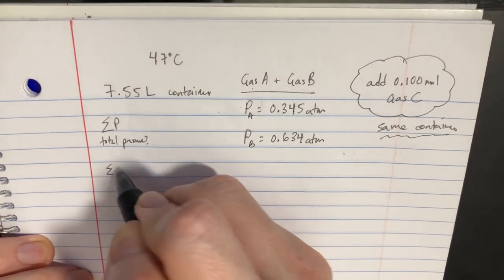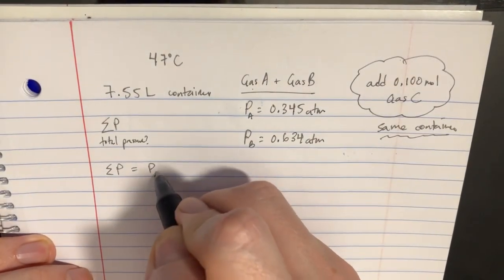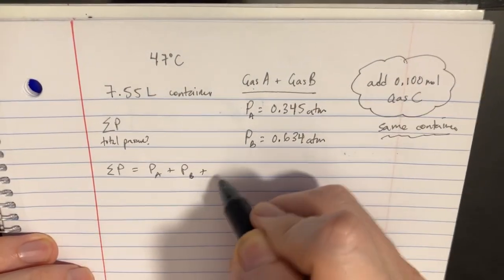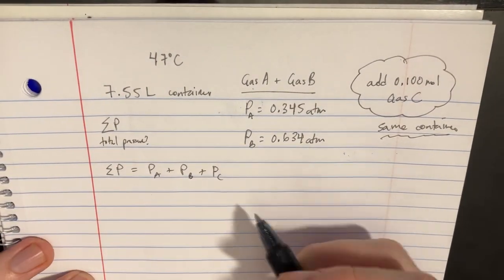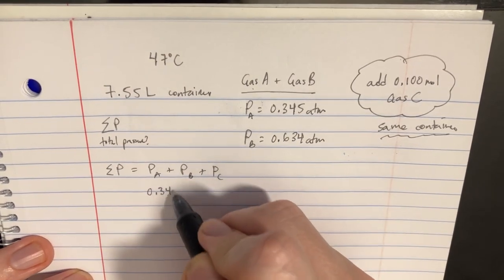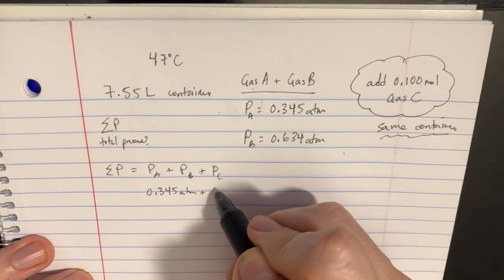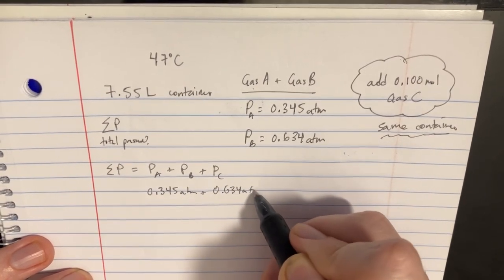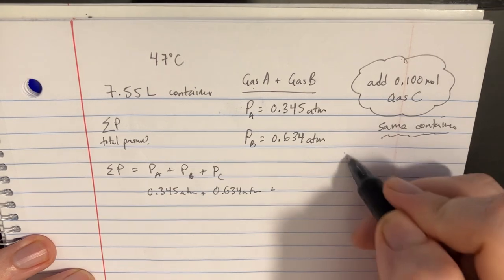So essentially we have this formula which says the pressure of A plus the pressure of B plus the pressure of C. And we should be able to plug these numbers in there so we're pretty close. 0.345 plus 0.634. And then what's the pressure of C?